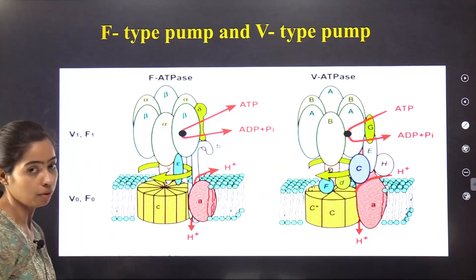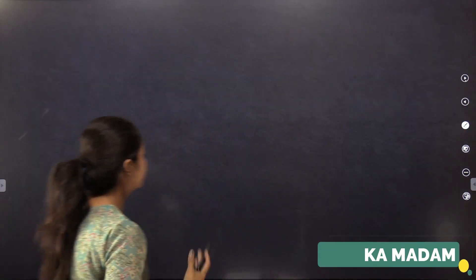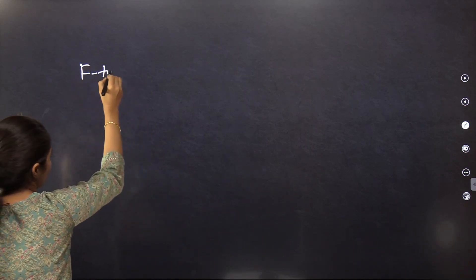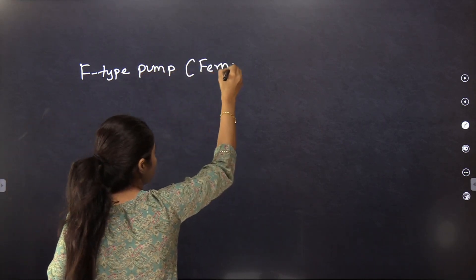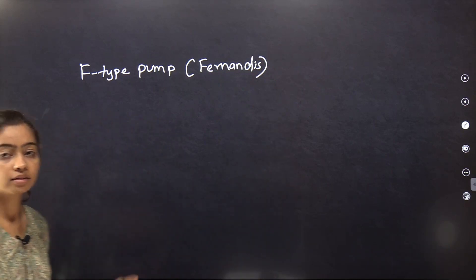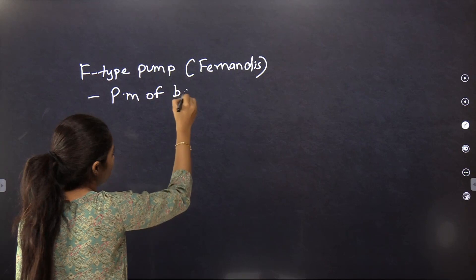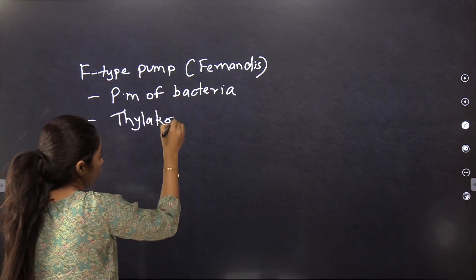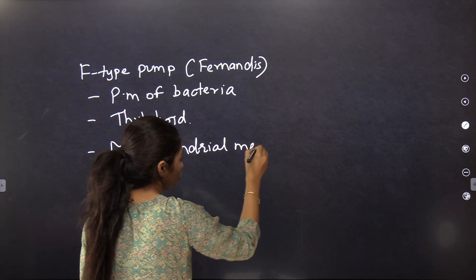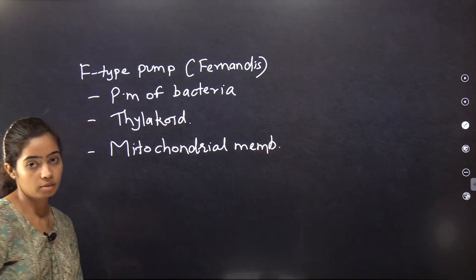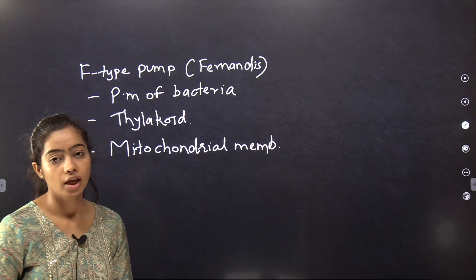The next points are the F-type pump and the V-type pump. Let's discuss the details about the F-type pump. The F-type pump is named from the scientist Fernandes. It is present on the plasma membrane of bacteria, on the thylakoid, and on the inner mitochondrial membrane. That is the location of the F-type pump.